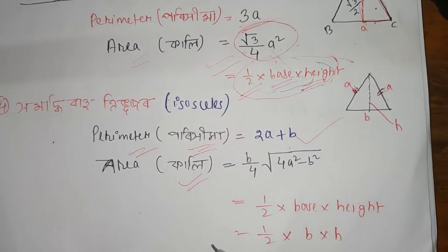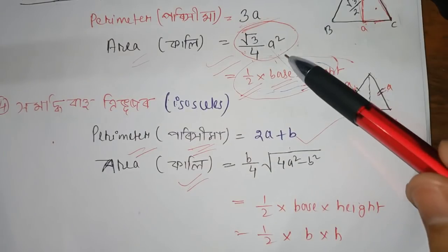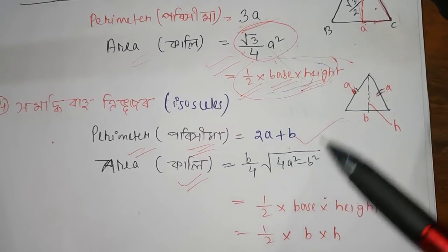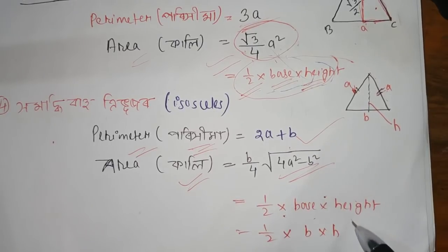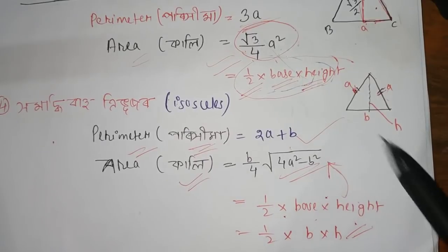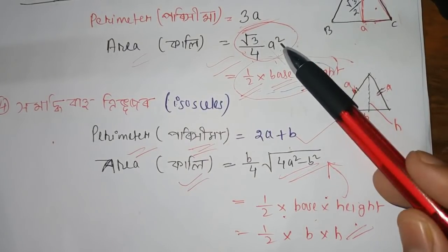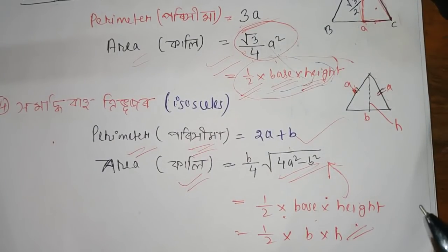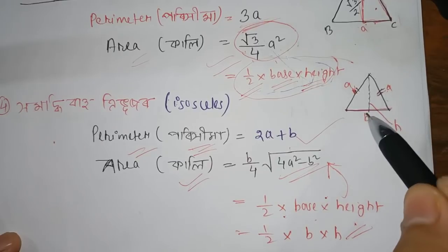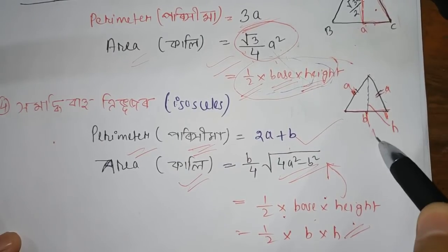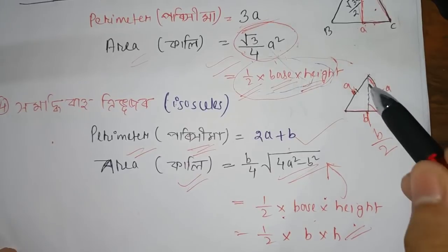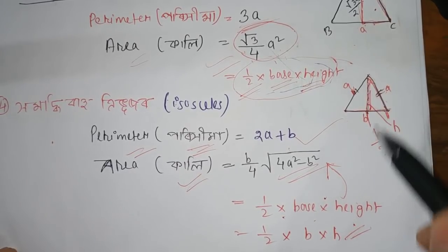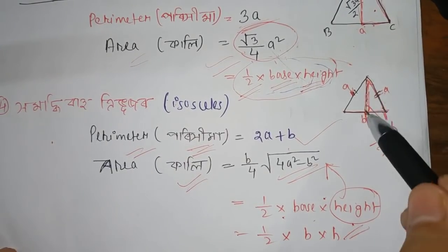What is the formula? You can see that the formula is the one you can choose. Half into base into height is the formula to use. If you have b and b, then b by 2 — clear as a — and this is b by 2.